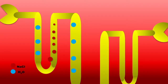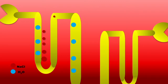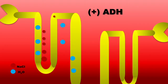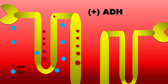Sodium is actively pumped out of the thick ascending limb of Henle. The thick ascending limb of Henle is impermeable to water. But with ADH, water is reabsorbed in the collecting duct, increasing the sodium concentration. As new filtrate flows in from the proximal convoluted tubule, water is reabsorbed in the descending loop of Henle due to the high sodium from the thick ascending limb of Henle.